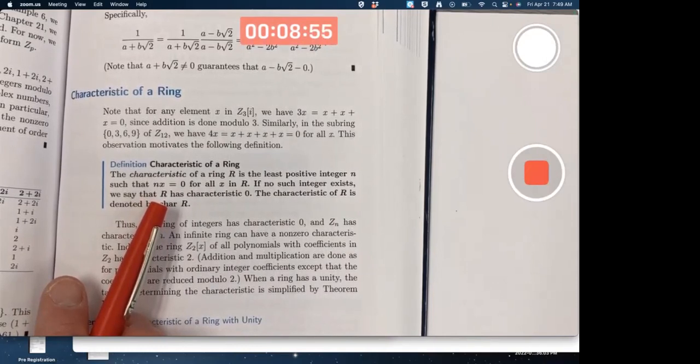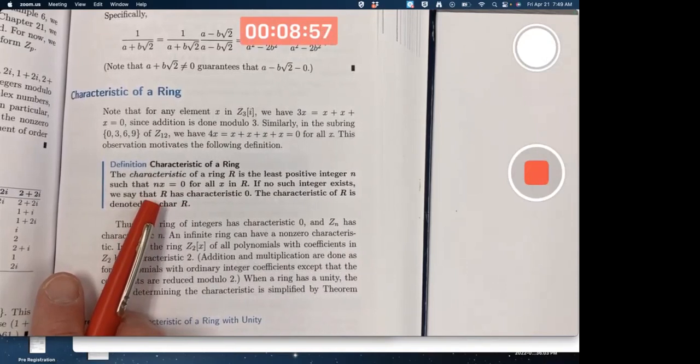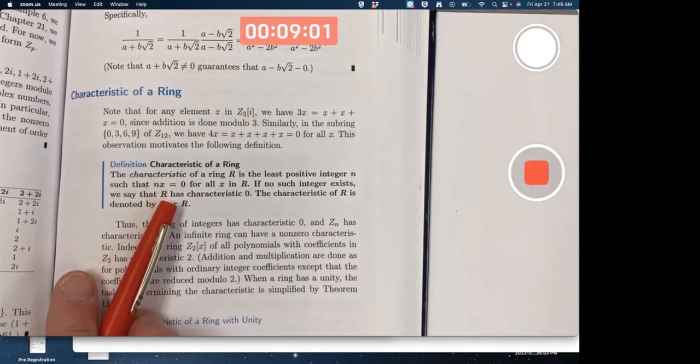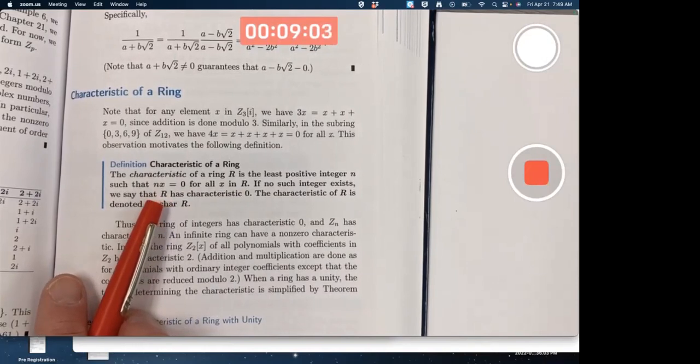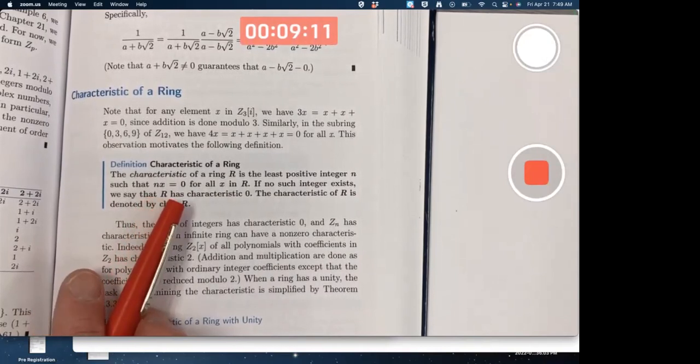The operation here, even though it looks like a multiplication, is really addition. And 0 is the additive identity. So we're talking about the least positive integer, such that when you add any ring element to itself n times, you get the additive identity.